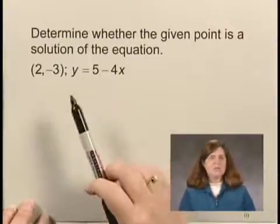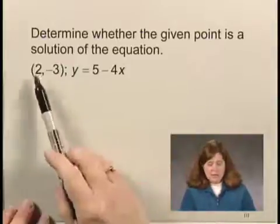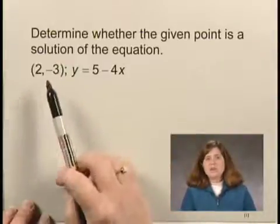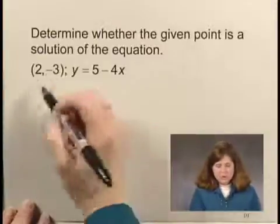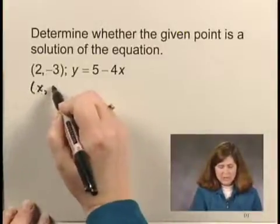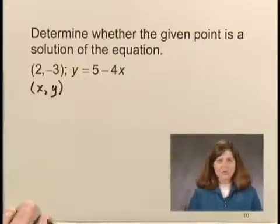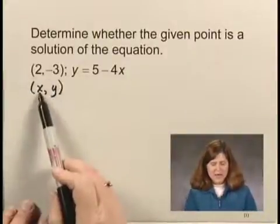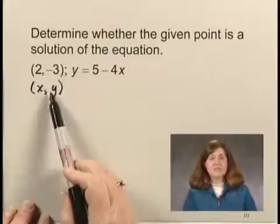The variables in the equation are x and y. In the ordered pair, we substitute in alphabetical order, which means x, y is alphabetical order of the variables, so the 2 will correspond to the x and the negative 3 to the y.